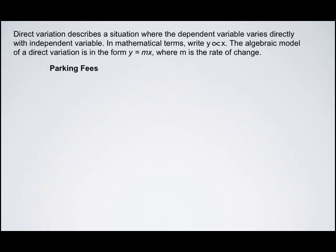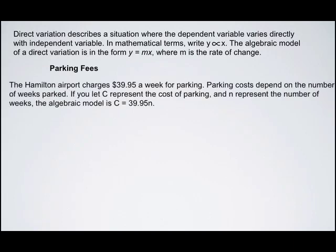Let's consider a parking fees example. The Hamilton Airport charges $39.95 a week for parking. Parking costs depend on the number of weeks parked. If you let C represent the cost of parking and N represent the number of weeks, the algebraic model is C equals $39.95N. We can say that C varies directly with N, and it varies by the rate of change of $39.95 a week.